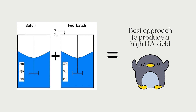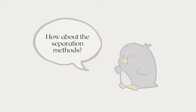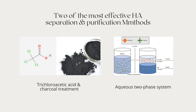Therefore, by increasing the number of microbes, we also increase the amount of hyaluronic acid synthesized. As for the last step, there is the separation and purification step, which totally depends on the final purpose of the researcher. There are two methods that are proved to be effective. The first one being trichloroacetic acid and charcoal treatment. Although it produces low yield and relatively low purity and recovery, it is able to separate and purify hyaluronic acid with a clinical grade molecular weight. Another method is using the Aqueous 2-phase system, which produces lower molecular weight than the previous method. However, it offers higher yield, 100% purity and recovery. But again, it totally depends on the final purpose.